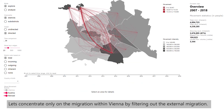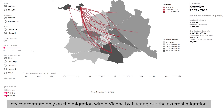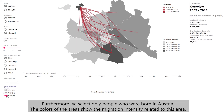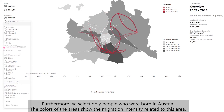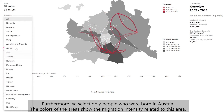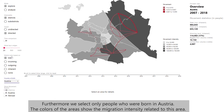Let's concentrate only on the migration within Vienna by filtering out the external migration. Furthermore, we select only people who were born in Austria. The colors of the areas show the migration intensity related to this area.